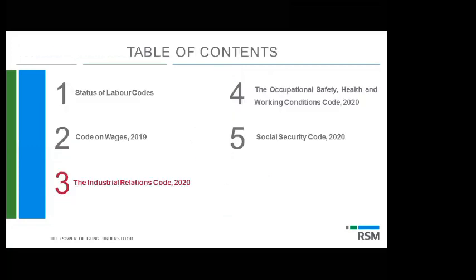Registers to be maintained under the code: Form 1 — register of wages, overtime and deductions; Form 2 — single application form; Form 3 — appeal before the appellate authority; Form 4 — employee register; Form 5 — wage slip; Form 6 — application for compounding of offenses. That covers the first code — the Code on Wages.